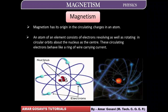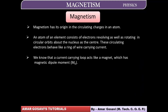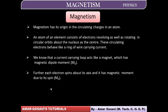The electron will be performing two types of motion: one is the orbital motion and the second one is the spin motion. So it will have a magnetic dipole moment due to orbital motion — we call that MO — because it is occurring because of the orbital motion. And because it spins, it will have a magnetic moment due to spin, represented by MS.